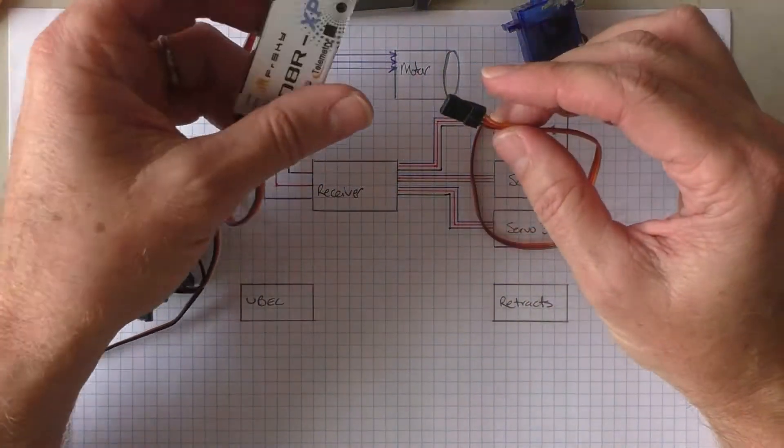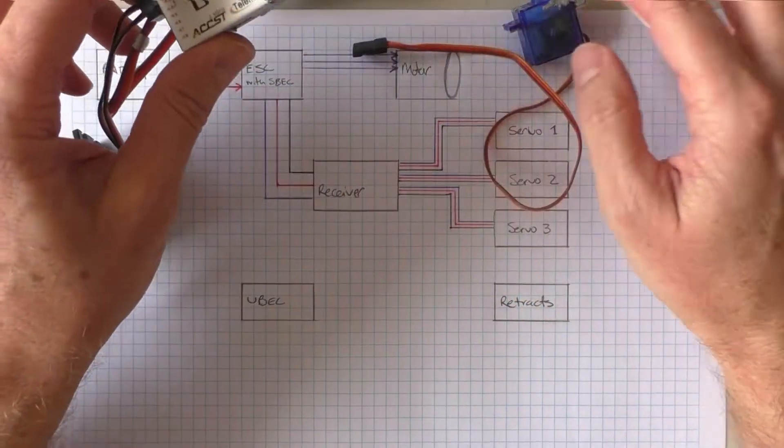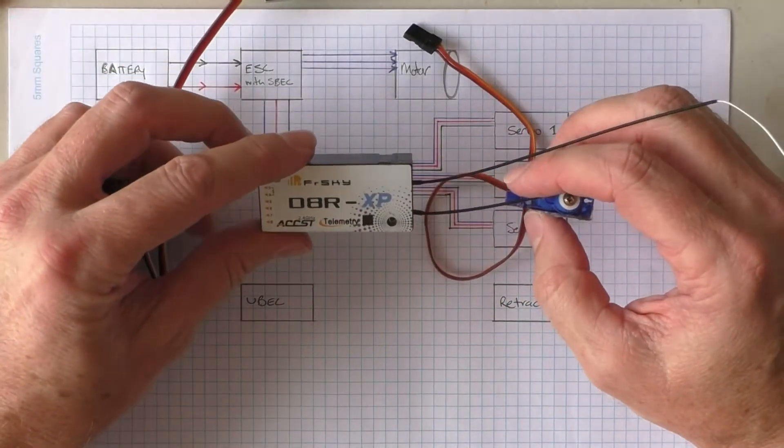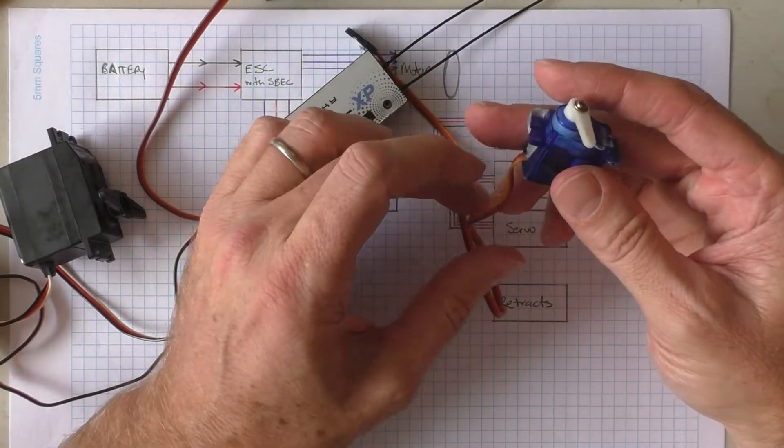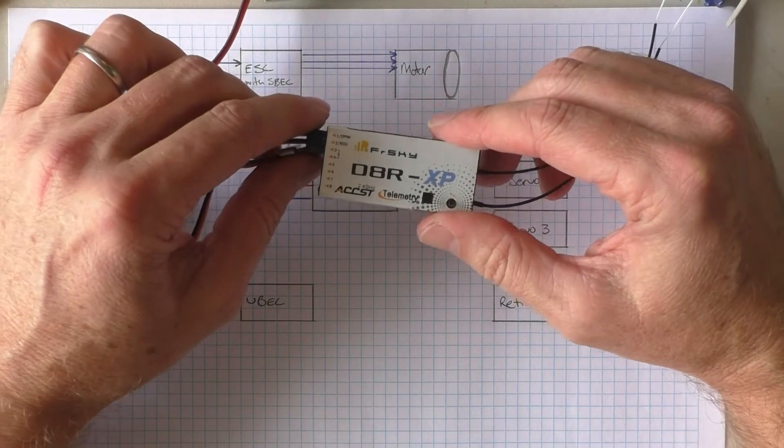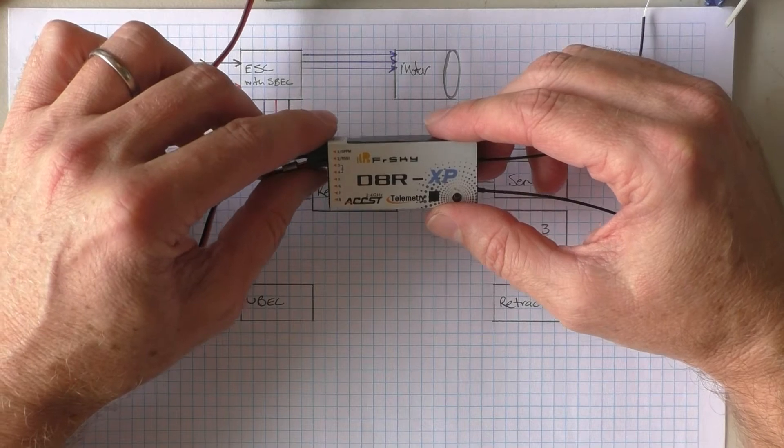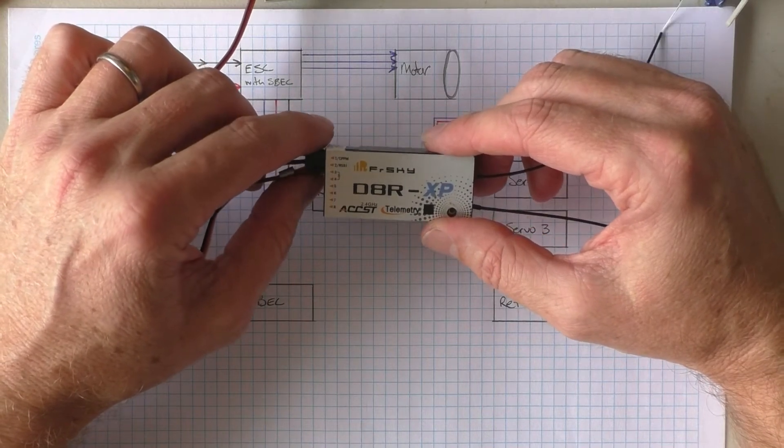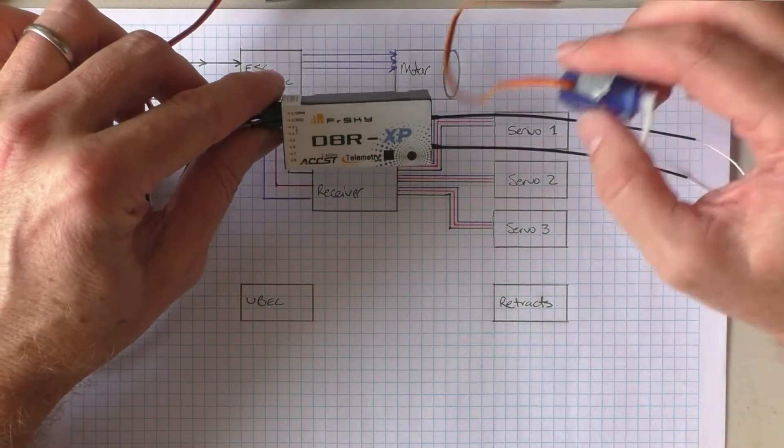So that's the setup. The servos plug into the receiver here. Now, this setup works fine if you're using micro or mini servos. This setup is fine for the majority of your planes, which are less than 1.4 meter wingspan. So 1,200 millimeter wingspan, all great setup. This will work fine.